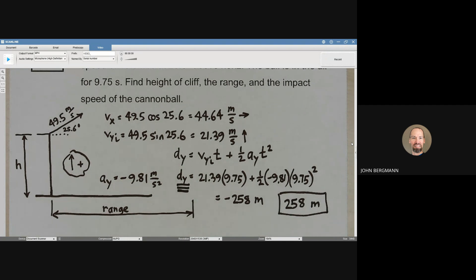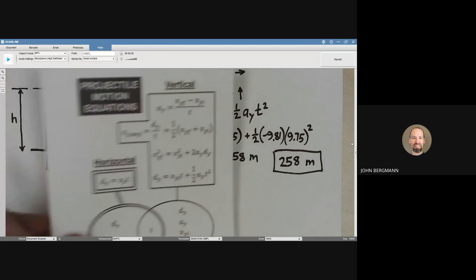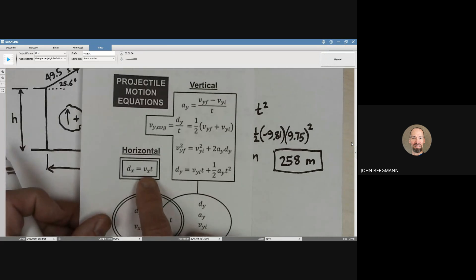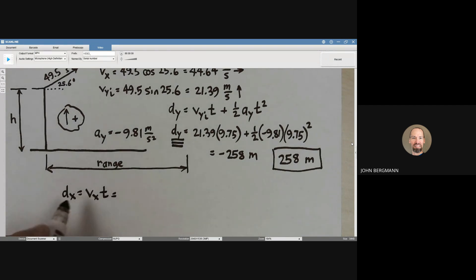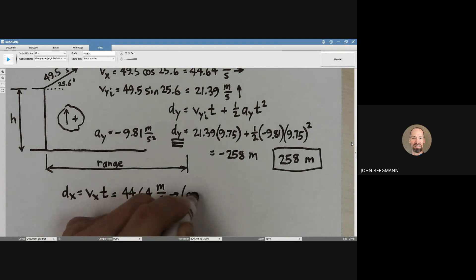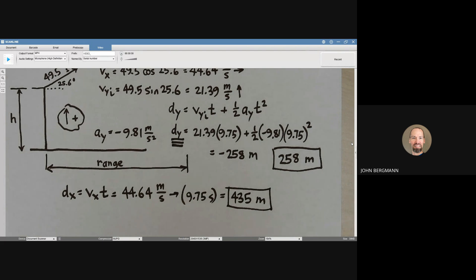Okay, so that's great. What else are we supposed to find? We're supposed to find the range. Well, the range typically is an easy one. Right here, vx times time. So the range, vx times time. What's vx? 44.64 meters per second to the right, every second for 9.75 seconds. To three significant figures, that comes out to be 435 meters. That wasn't so bad.